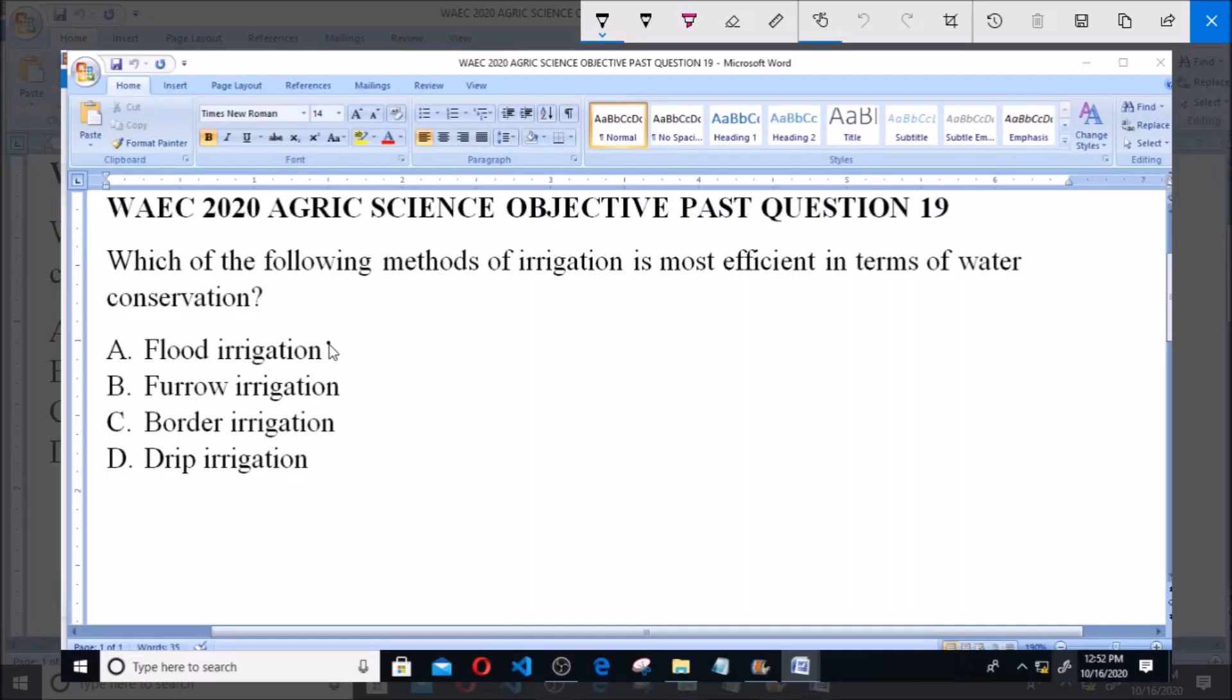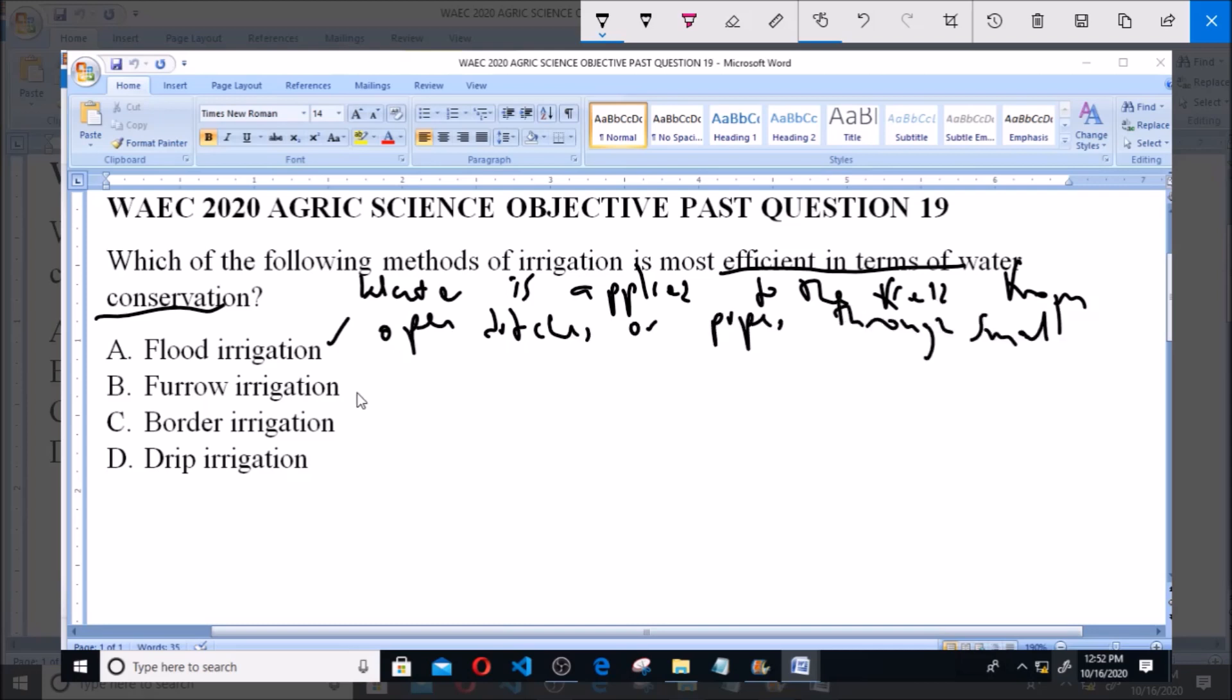Let's see which one is most efficient in terms of water conservation. In option A, flood irrigation, water is applied to the field from open ditches or pipes through small channels or small trenches. So water is applied to the field from these small trenches running through the crops.